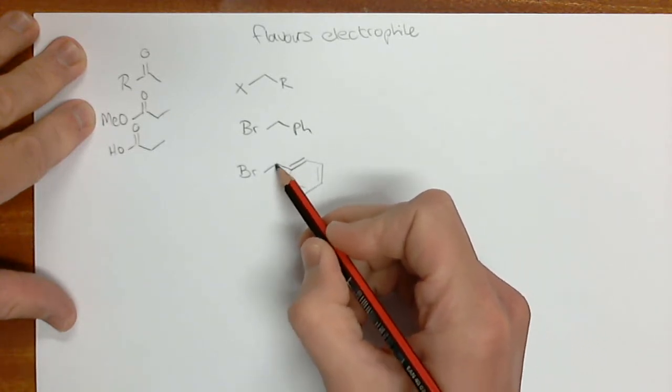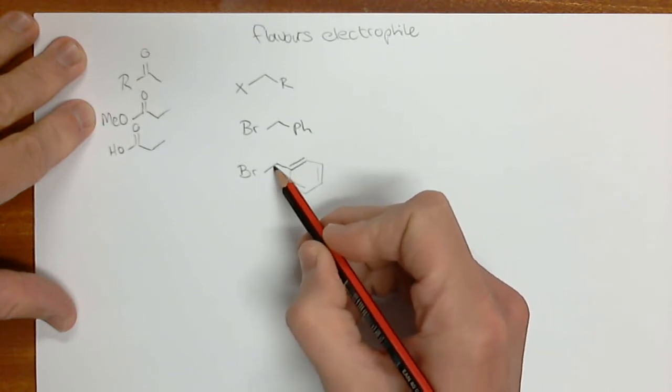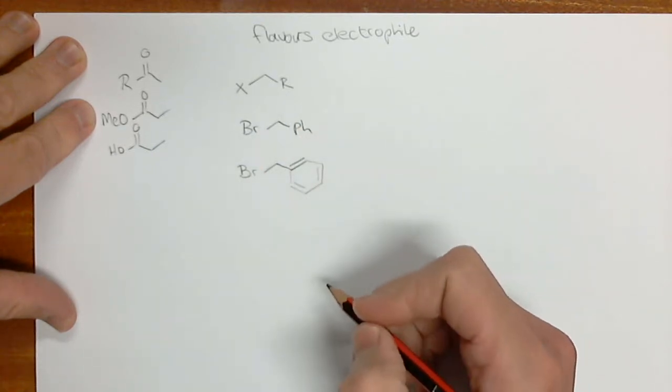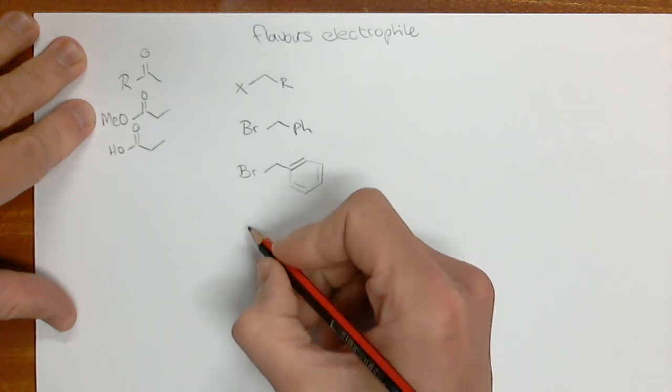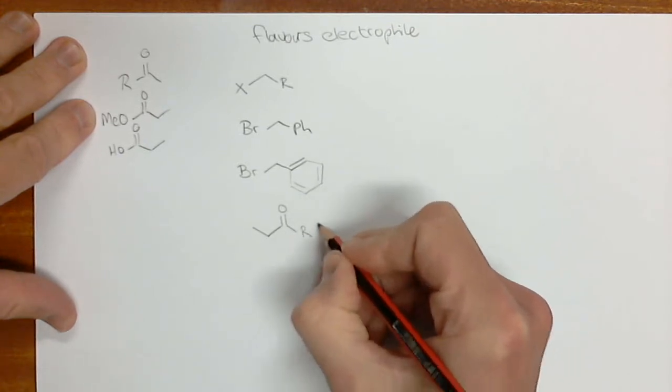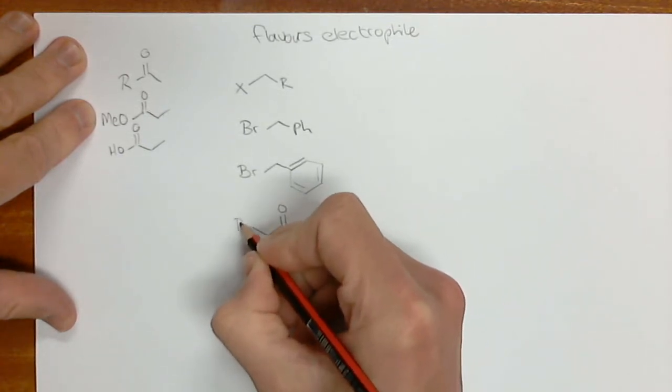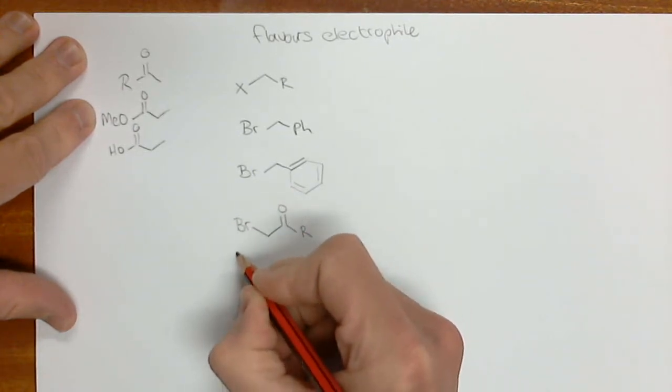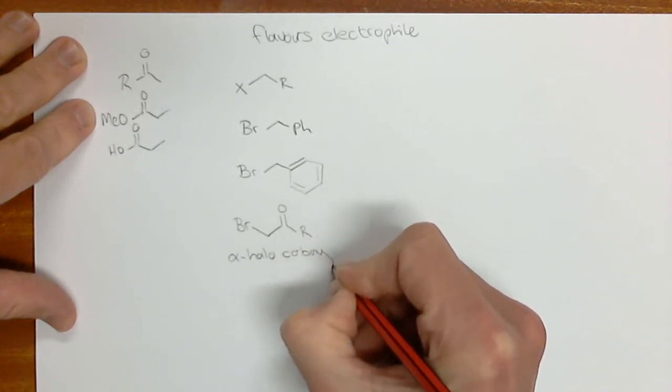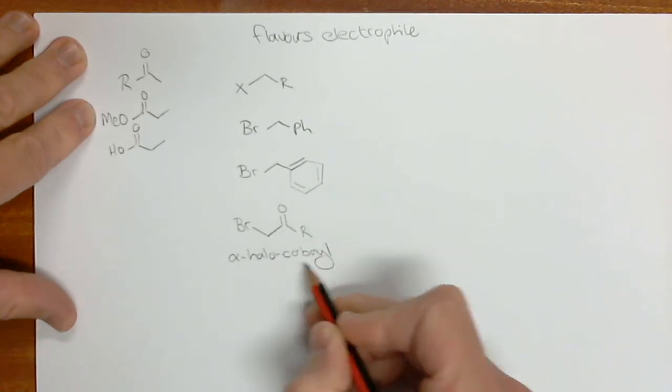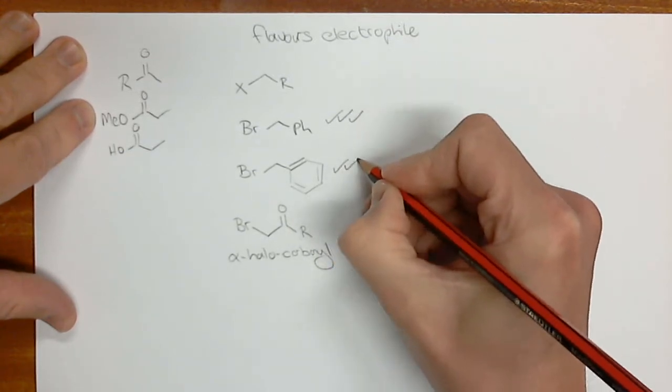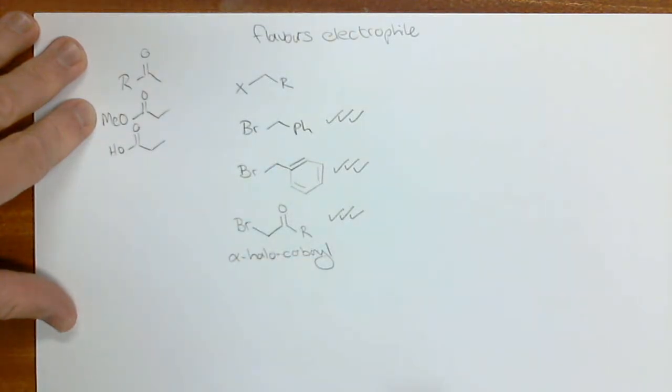A leaving group in the allylic position, next to a double bond, is actually a very good leaving group and makes these reagents very good electrophiles. There's something else that improves electrophiles: if they're next door to a carbonyl group. This is called an alpha-halo-carbonyl. These are very reactive electrophiles, excellent for these types of reactions.